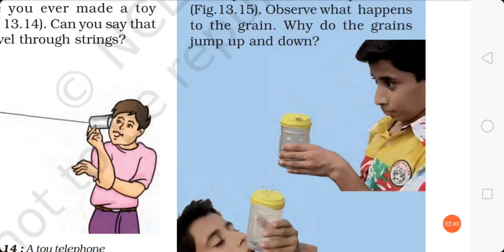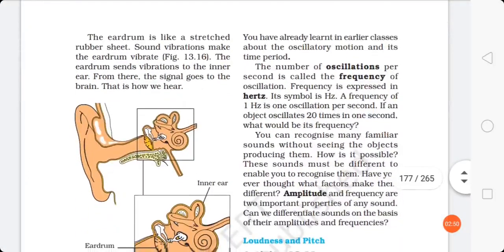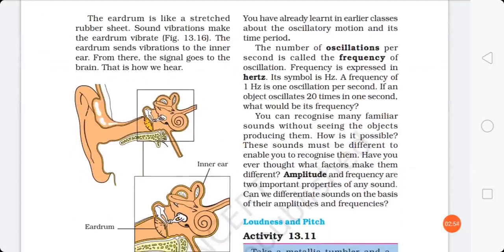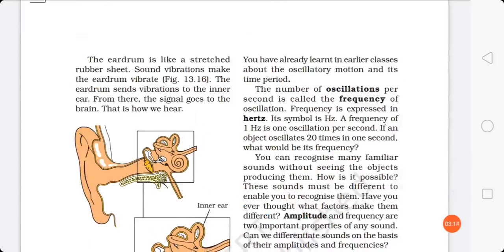Next we are going to understand how human ear works. The eardrum is same as the membrane we placed on that tin can. So first of all, the outer part of human ear is there, and then from there the sound waves enter into the ear canal and then strike on the eardrum. The eardrum vibrates, it's like a stretched rubber sheet. Sound vibrations make the eardrum vibrate and the eardrum senses the vibrations to the inner ear.